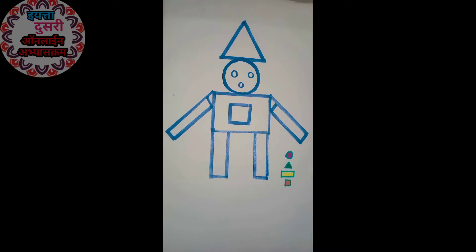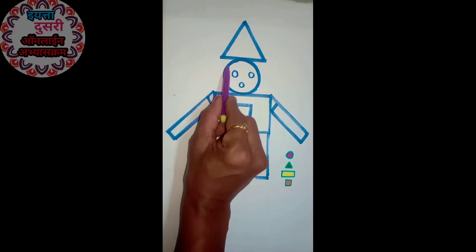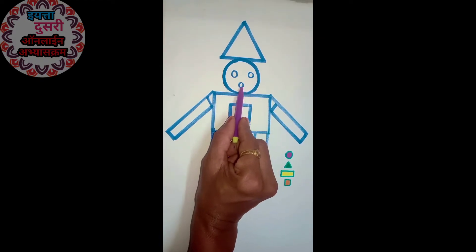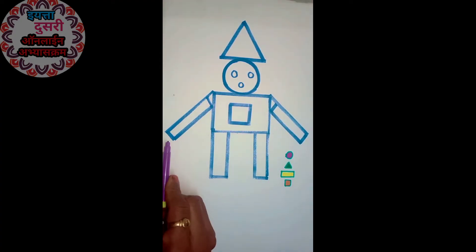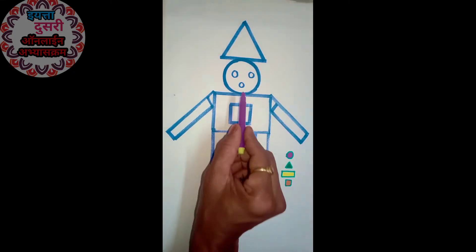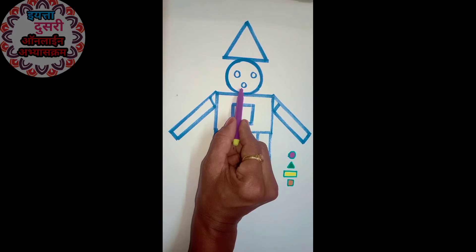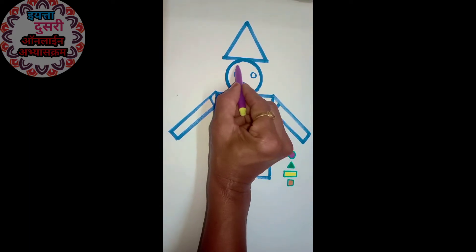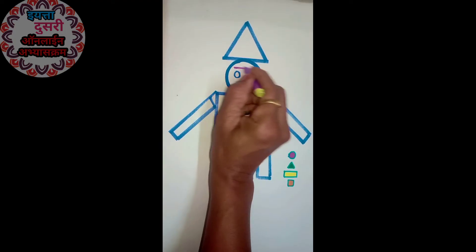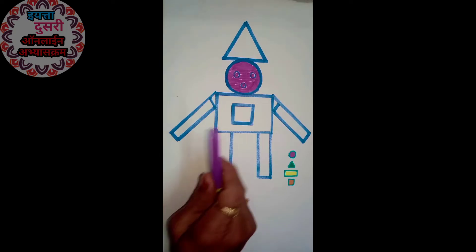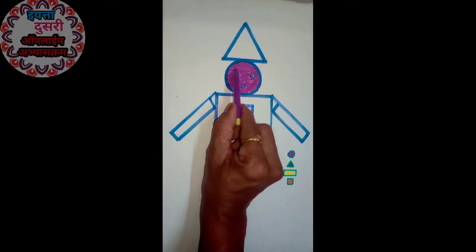Okay. Now, first I draw a circle. Where is the circle? Here. How many circles? One, two, three, four. I fill the color here.